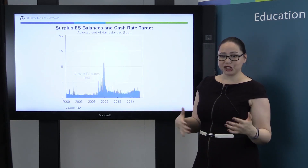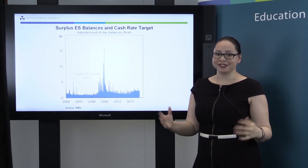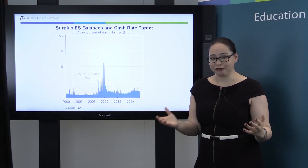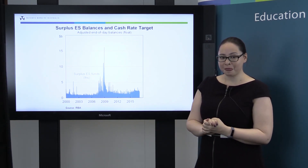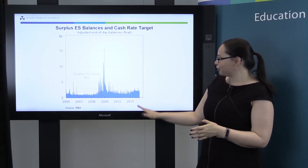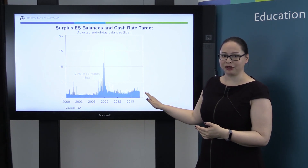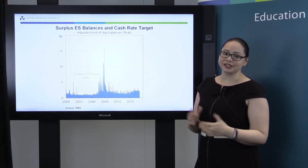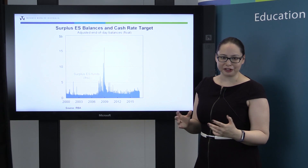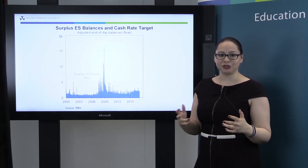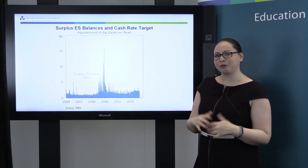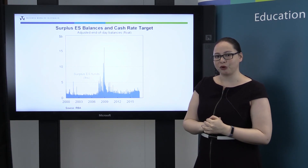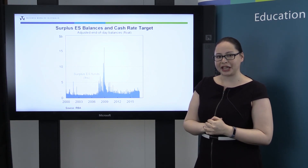I can actually show you what surplus ES balances, or the supply of liquidity, has been in the market since the year 2000. You can see at the moment we're sitting at around $2 billion, but at one point in time we were up at over $16 billion — and that was in the middle of the financial crisis. As I mentioned earlier, the banks wanted to hold a lot of extra precautionary balances at that time.